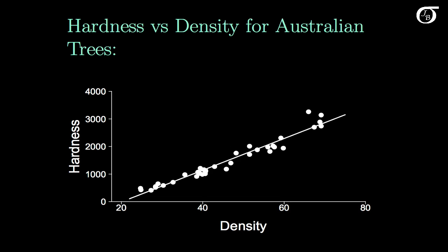Here's another dataset that we've looked at previously. Janka hardness versus density for 36 Australian trees. And we fit a least squares regression line through those 36 points, and it looks to be a pretty reasonable fit. But let's see what the residual plot looks like.